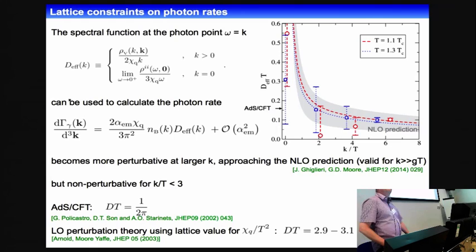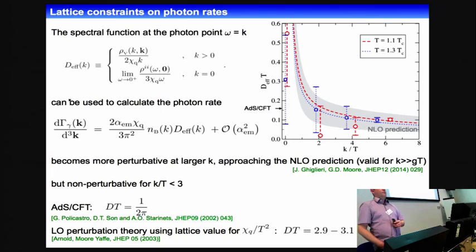A comment from the audience: the result may be close to AdS/CFT because computing the diffusion coefficient divided by susceptibility gives a number of 1 over 2 pi T, which is not large compared to AdS/CFT. The session chair then moves on.